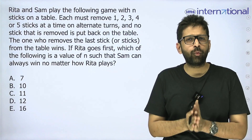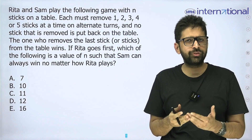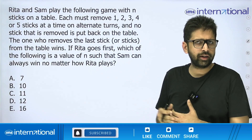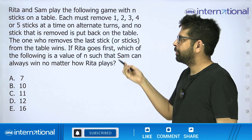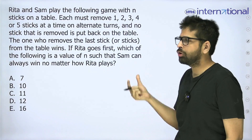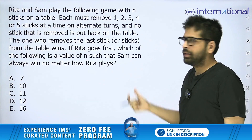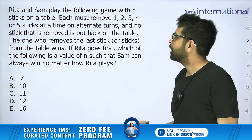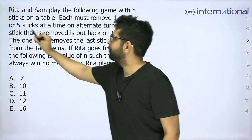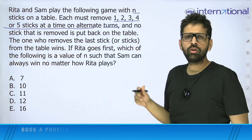This is an amazing question that involves a lot of logic. Let's try to understand the question first — let's break it down as to what the paper setter wants us to do, and then we will tackle the question. So there are two people R and S. They play the following game with N sticks on a table, meaning there can be any number of sticks. Each must remove 1, 2, 3, 4, or 5 sticks at a time on alternate turns.